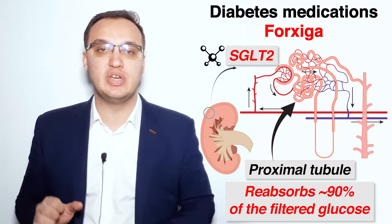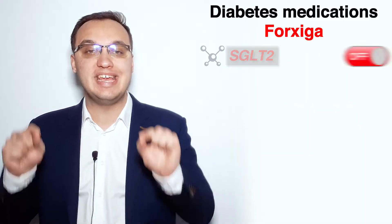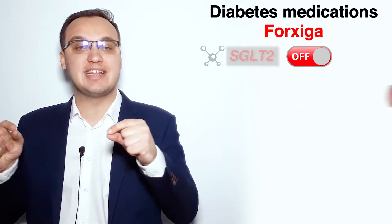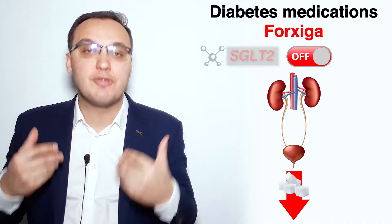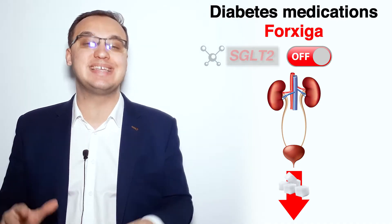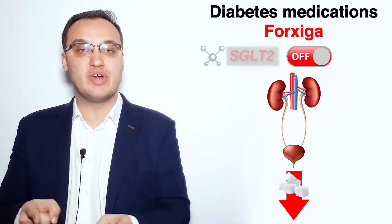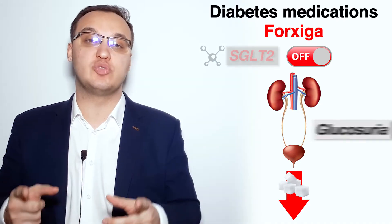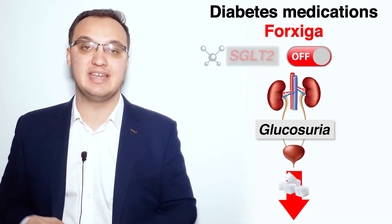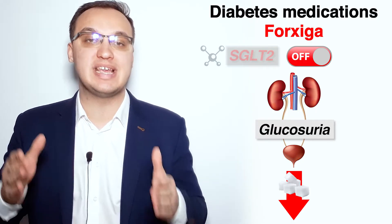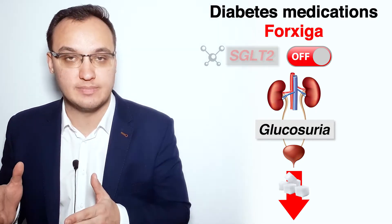SGLT2 inhibitors will inhibit this molecule, which means that glucose will be excreted through the kidneys into the urine, and this is what we call glucosuria — meaning glucose in the urine.